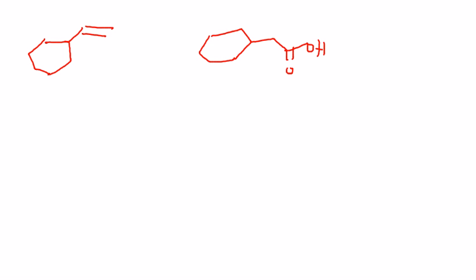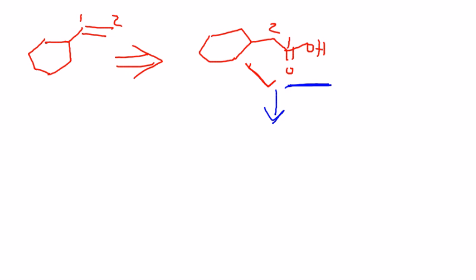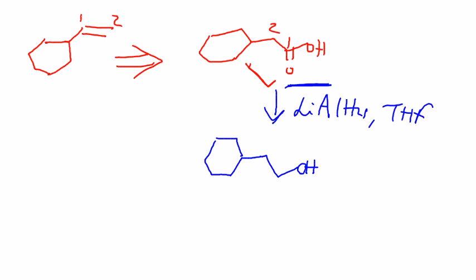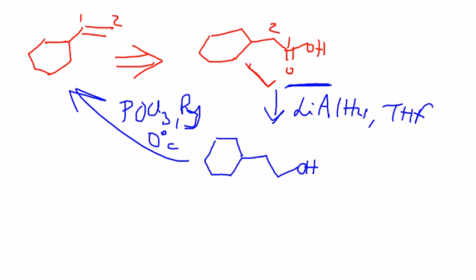The second synthesis problem was to generate 1-cyclohexylethene from 2-cyclohexylethenoic acid. The 1 and 2 designations have interchanged following nomenclature rules, but you basically have to get rid of the carboxylic acid and introduce the double bond. One way to do that: reduce all the way to the alcohol using lithium aluminum hydride, then subject that to POCl₃/pyridine at 0°C. If you don't like that, you can always use concentrated H₂SO₄.